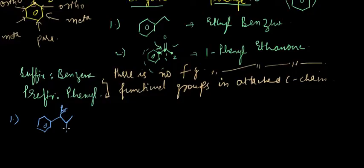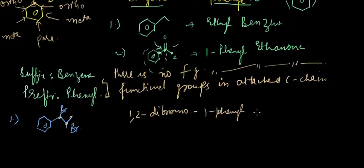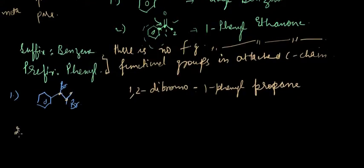Now, as you can see, we have halogens attached to the carbon chain, so we'll use phenyl as a prefix. Counting the carbon atoms: one, two, three. Phenyl and bromo are attached to the first carbon atom. Writing in alphabetical order: 1,1-dibromo, 1-phenyl propane.